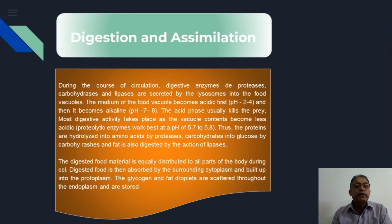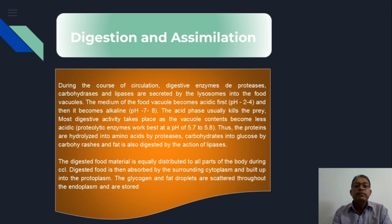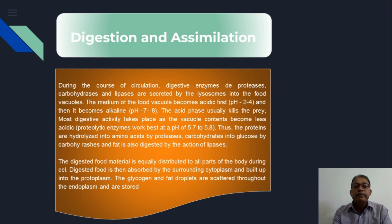During the course of circulation, digestive enzymes — that is, proteinases, carbohydrases, and lipases — are secreted by the lysosomes into the food vacuoles. The medium of the food vacuoles is at first acidic, with a pH range of about 2 to 4, and then it becomes alkaline. The acidic phase usually kills the prey. The proteolytic enzyme acts within the food vacuoles and brings the pH of the food content to between 5.7 and 5.8.